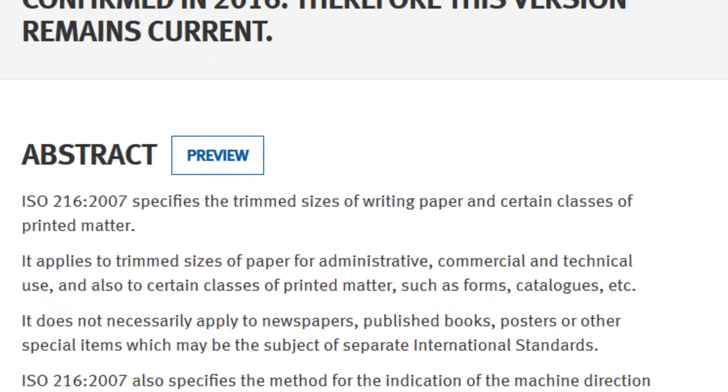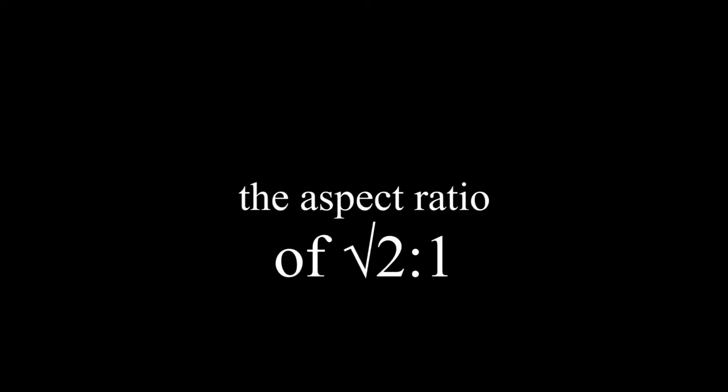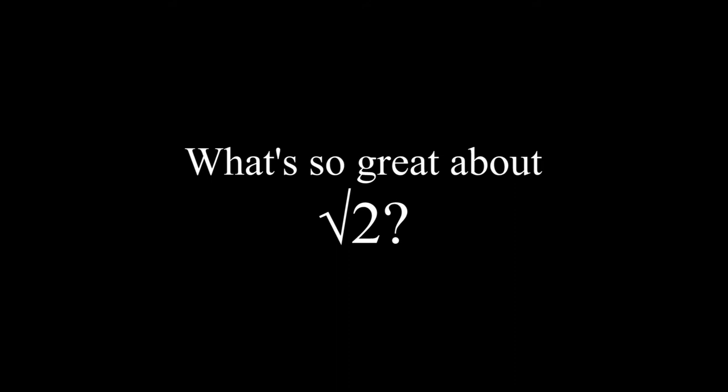ISO 216 specifies three series of paper sizes, A, B and C, that all have the aspect ratio of square root of 2 to 1. To put it simply, the longer side of the paper is root 2 times the shorter side, or very roughly 1.4 times the shorter side. What's so great about root 2, you ask?